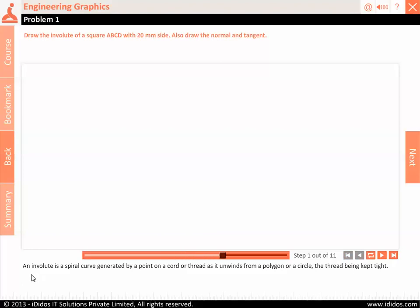An involute is a spiral curve generated by a point on a cord or thread as it unwinds from a polygon or a circle, the thread being kept tight.